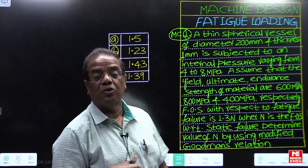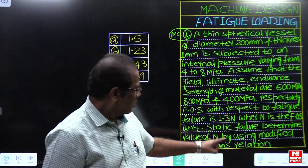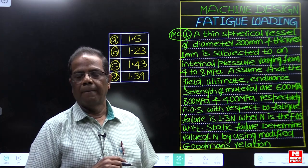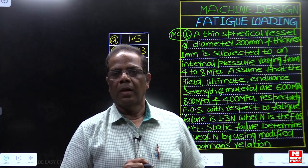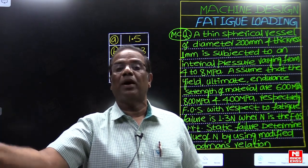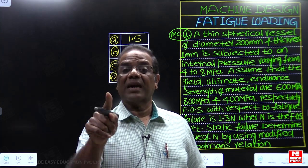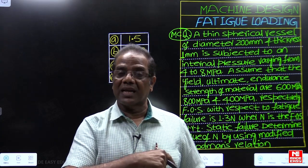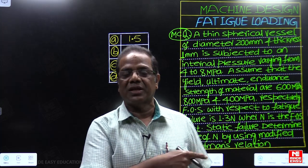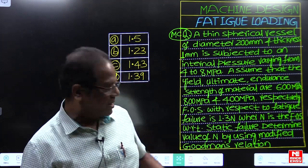Determine the value of N using the modified Goodman relation. Most students get confused because two factors of safety are given — they tend to use 1.3N everywhere and get the incorrect answer. Most textbooks write the Goodman equation as K_T·sigma_M / sigma_UT + K_F·sigma_V / sigma_E ≤ 1/N. But that equation is only valid when the factor of safety with respect to static failure and fatigue failure are equal. When they are different, that is the specialty of this question.